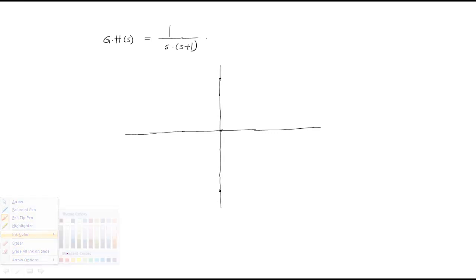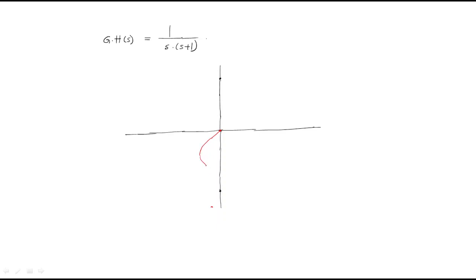For 1 / [s(s+1)], the polar plot starts from −90° and ends at 0. The polar plot moves like this — in an anti-clockwise direction — so we get a curve like this. The first point, drawing the polar plot, is now complete.